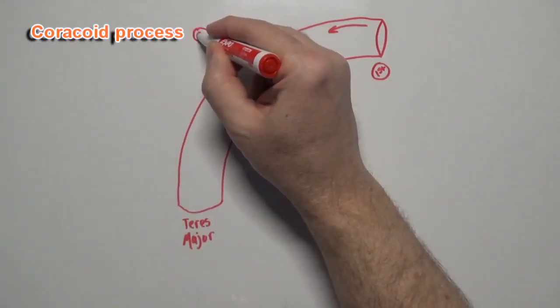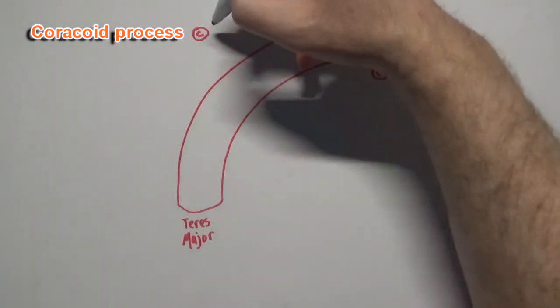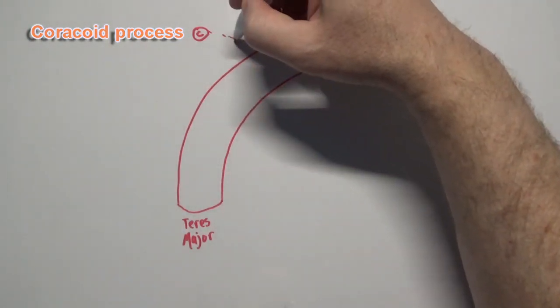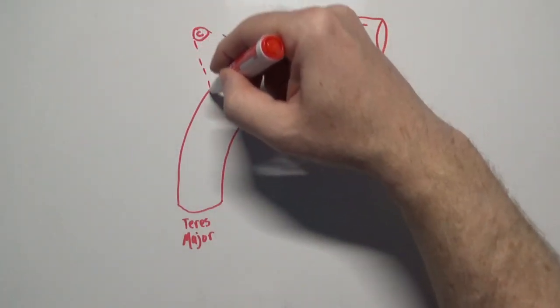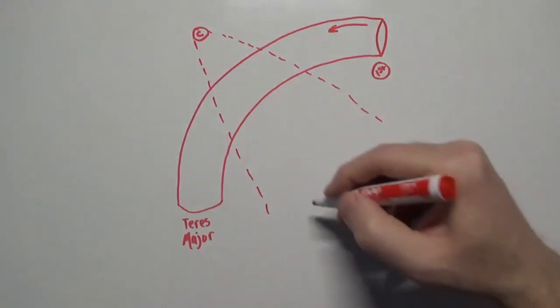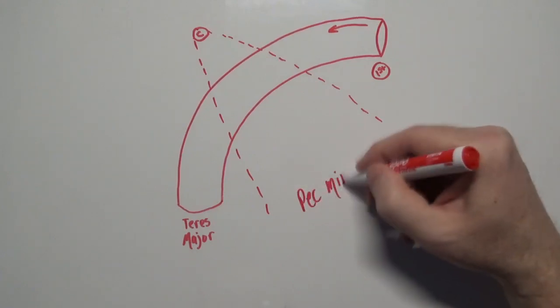since these vessels are usually the lowest branches off the axillary artery. Here, I'm drawing the coracoid process of the scapula. The pectoralis minor attaches to the coracoid process and to ribs 3, 4, and 5 passing over the axillary artery. This is significant because the medial and lateral borders of the pectoralis minor muscle act to divide the axillary artery into 3 sections.